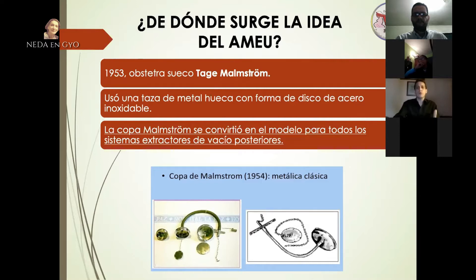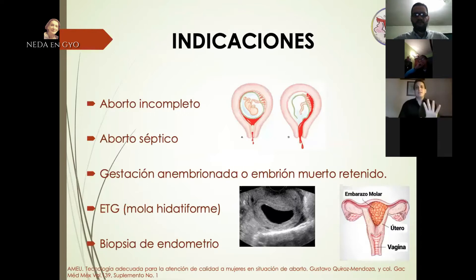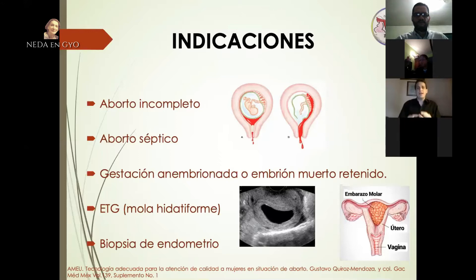En cuanto a las indicaciones, el aborto incompleto es una de las principales, teniendo en cuenta que este debe tener una altura uterina menor o igual a 12 centímetros, ya que no existen cánulas mayores para un legrado con altura uterina mayor. El aborto séptico está indicado siempre y cuando la paciente reciba antibioticoterapia de 6 a 8 horas previos a la intervención, para crear un ambiente adecuado con menos reacción antiinflamatoria y disminuir los riesgos de perforaciones uterinas. La gestación anembrionada o embrión muerto retenido, conocido como aborto diferido temprano, también está indicado; cuando son abortos diferidos tardíos, la altura uterina es mayor de 12 semanas y no es recomendable realizarlo.